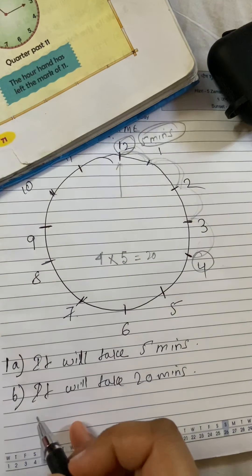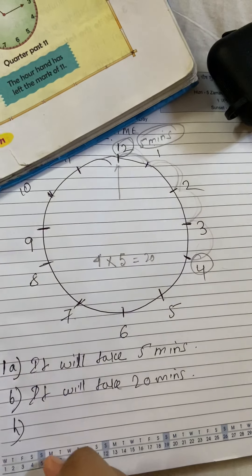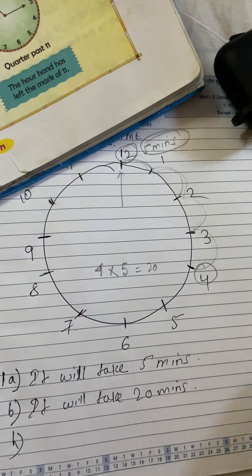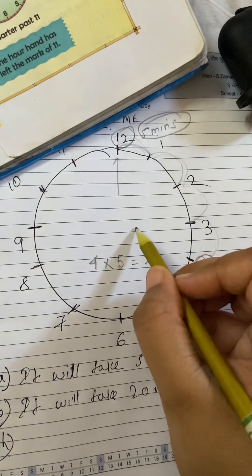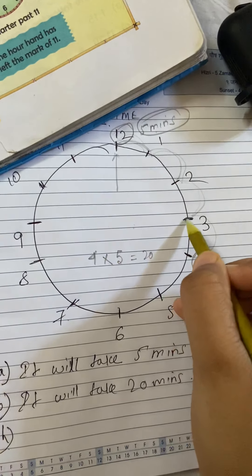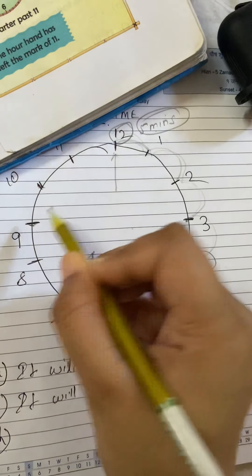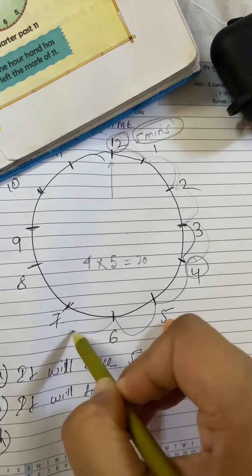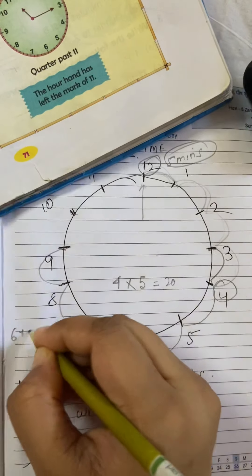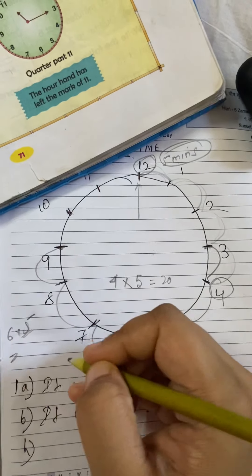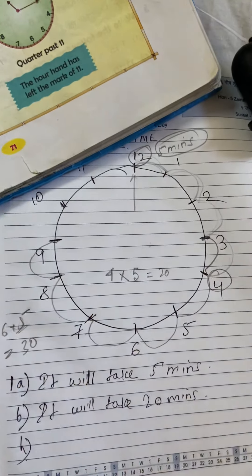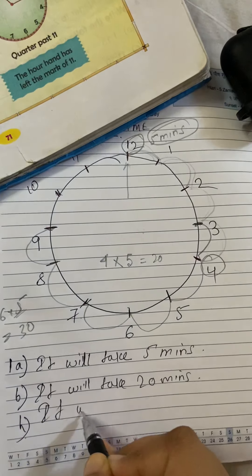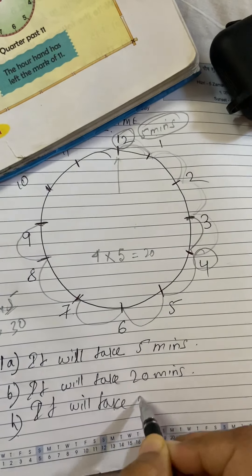Similarly, question 8: how many minutes will it take to move from 3 to 9? From 3 to 9 — how many divisions? 1, 2, 3, 4, 5, 6 — six divisions are crossed. Find the answer by multiplying by 5: 6 into 5 = 30. It will take 30 minutes.